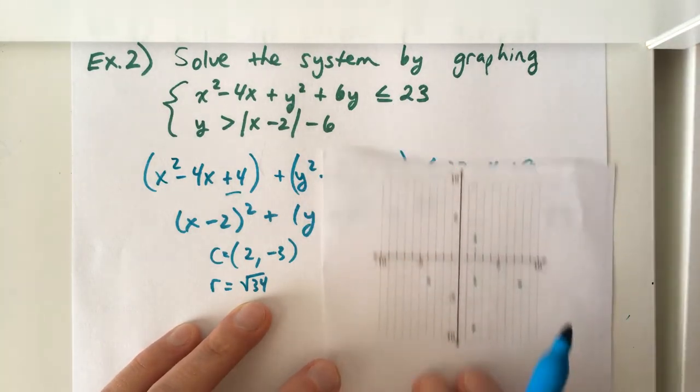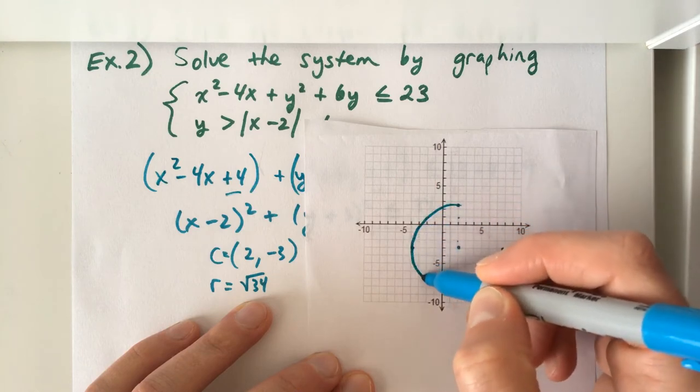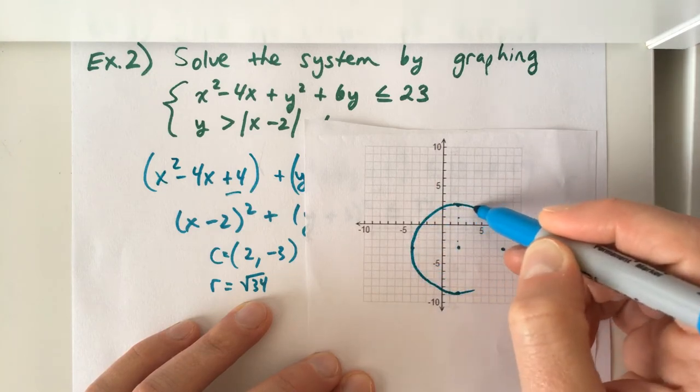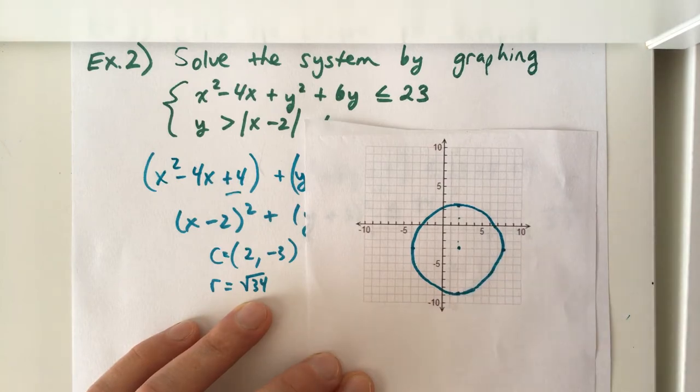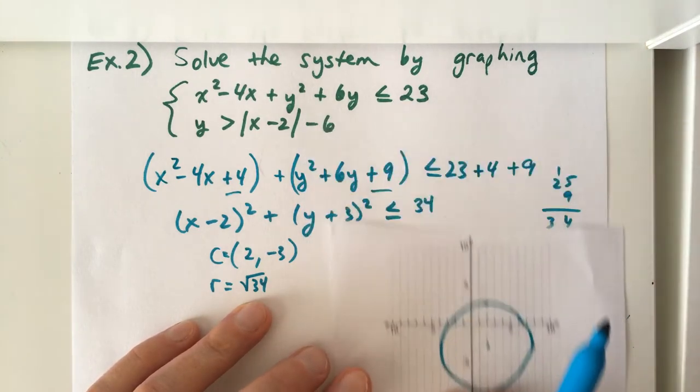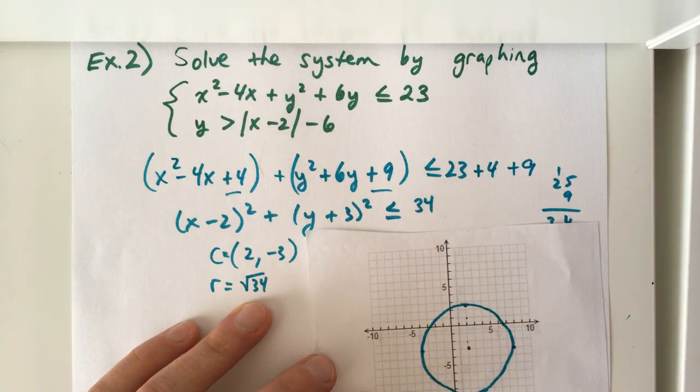It's less than or equal to, so we're going to connect those with a solid line. And again, the idea of less than or equal to, it's going to be shaded inside the circle.